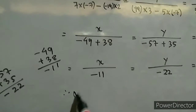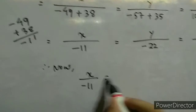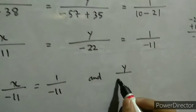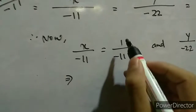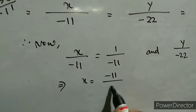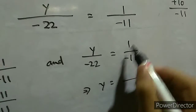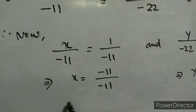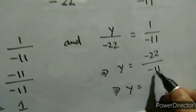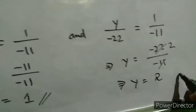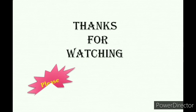Now comparing: x by minus 11 equals 1 by minus 11, and y by minus 22 equals 1 by minus 11. For x: minus 11 divided by minus 11, the signs cancel and 11 over 11 equals 1, so x equals 1. For y: minus 22 divided by minus 11, the signs cancel and 22 over 11 equals 2, so y equals 2. Therefore the solution is x equal to 1 and y equal to 2. Thank you.